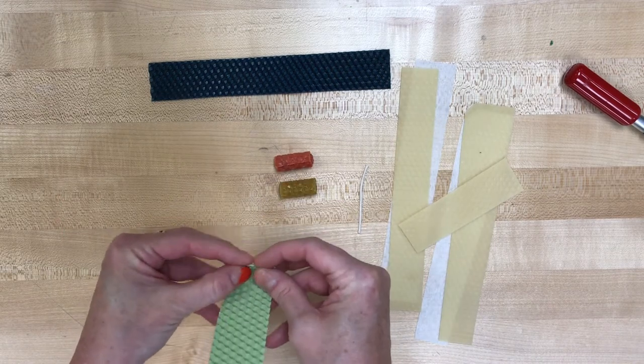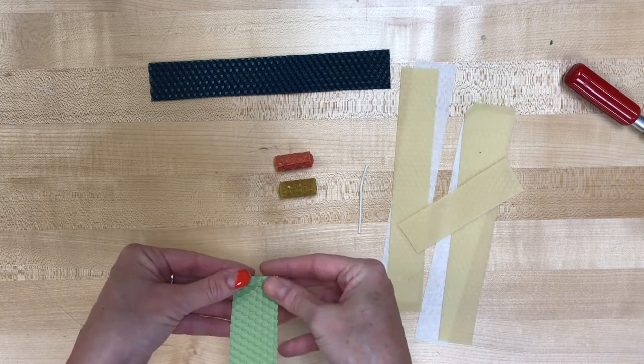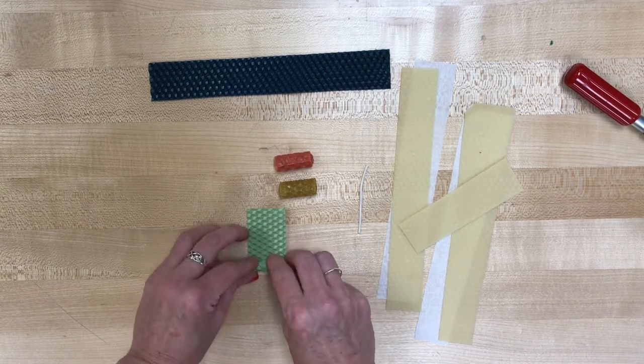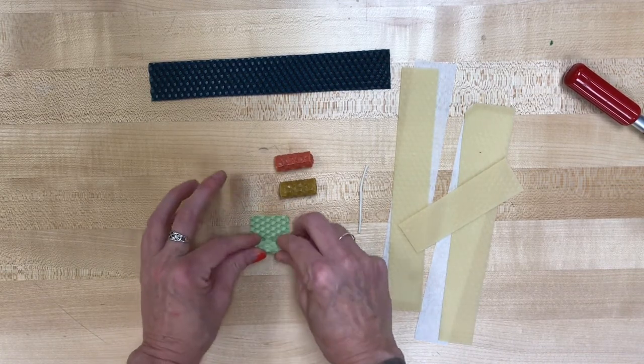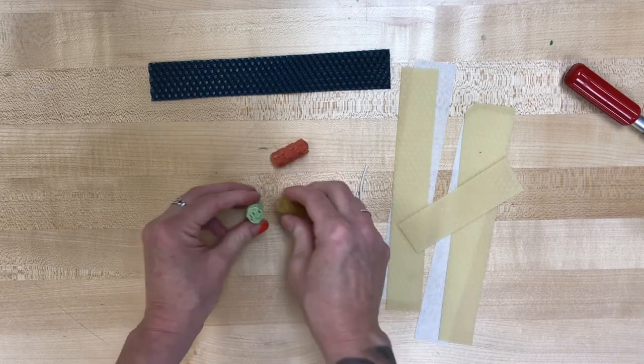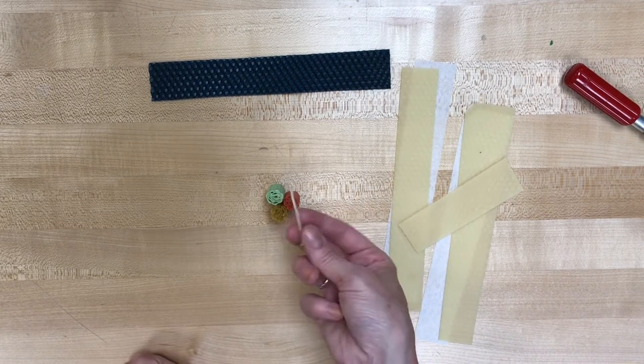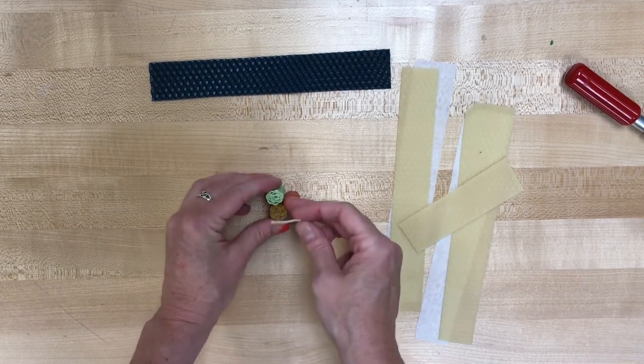Two down, one to go. We're going to do the same thing with the green. There we go. When you stand all those up, this is how they're going to be in the middle of the candle. And in the middle of all of those is where we're going to put our wick.